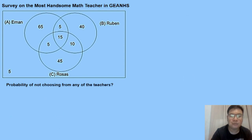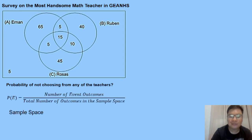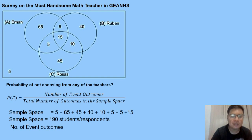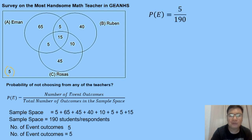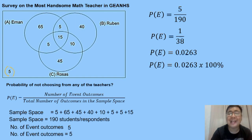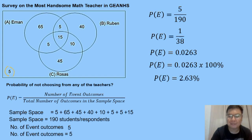Our last question: probability of not choosing any teacher — students who didn't find any of the three teachers handsome. Using the same formula and sample space of 190, the event outcomes are the 5 students outside all three circles who didn't answer. Substituting: 5 over 190, lowest term is 1 over 38, which equals 0.0263 or 2.63% — the probability of not choosing from any of the teachers.